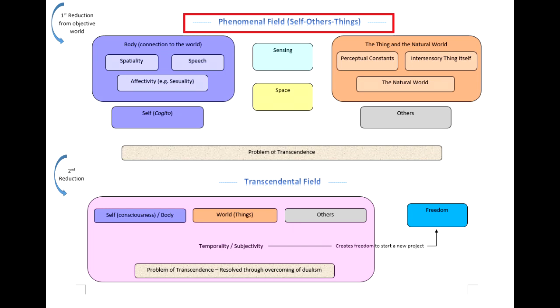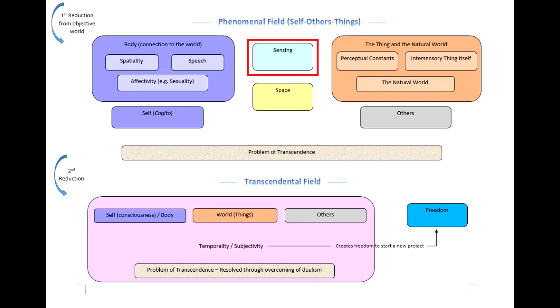Moving to the first box: sensing. For Merleau-Ponty, sensing was basically a lived communication — he calls it a communion with the world. He devoted the first part of Phenomenology of Perception to sensation, and that was really the punchline: sensing is a lived engagement with things. He even says we can think of sensing as the thing thinking itself in me, so there's even an element of passivity to the subject — we're thrust into the world, we're in the middle of it.